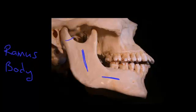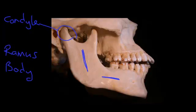The first is this area up here, and this area is called the condyle. That's going to be the key bone that articulates to form the temporomandibular joint.